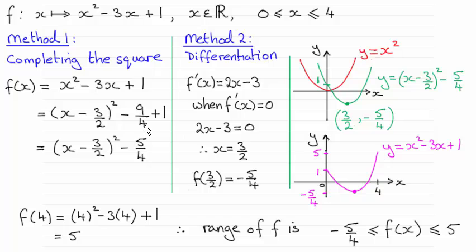By subtracting 9 over 4 these two terms give us x squared minus 3x and then by adding the one on the end I get exactly the same as this result up here. So minus 9 quarters plus 1 gives us minus 5 quarters.